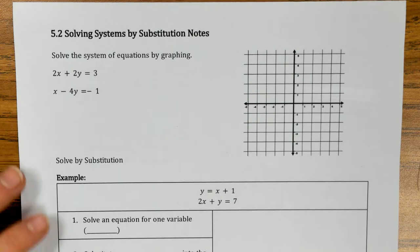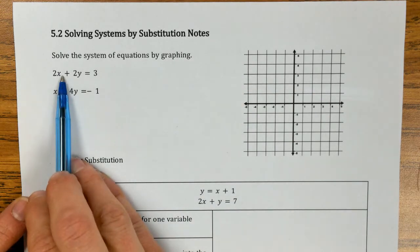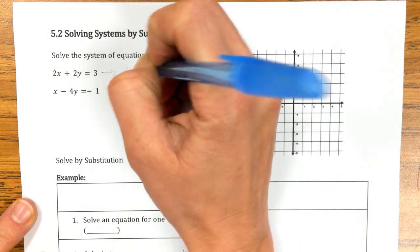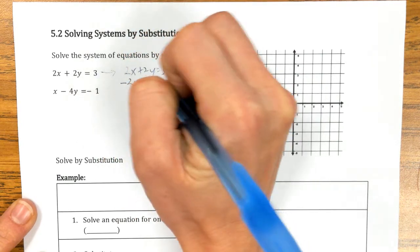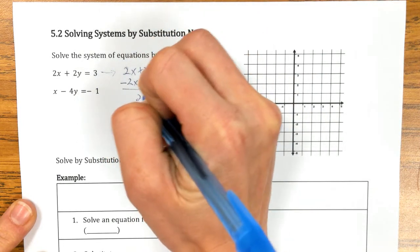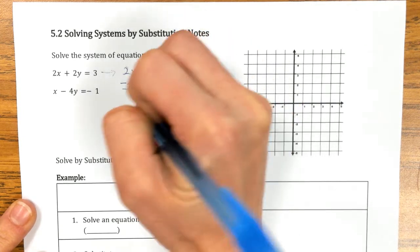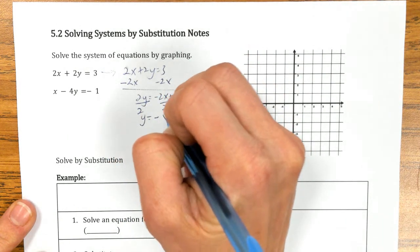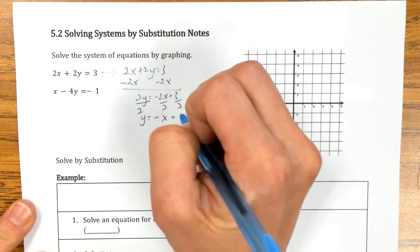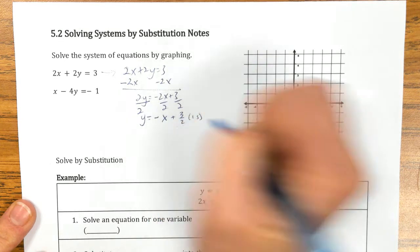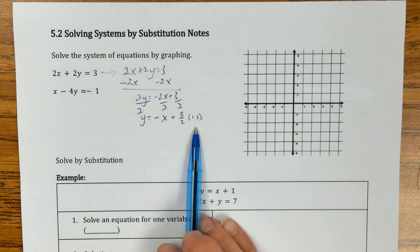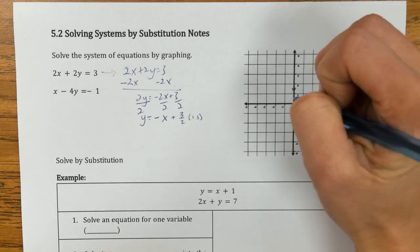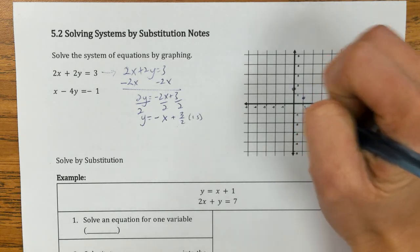Okay, let's see how you did. If we take a look at this first equation, it's not in slope-intercept form, so let's go ahead and do that. You'd have to subtract 2x on both sides first, and then divide everything by 2. And 3 over 2, which you could also say is 1.5. So if I were to graph this, I would start at my y-intercept, which is 1.5, and go down 1, over 1.